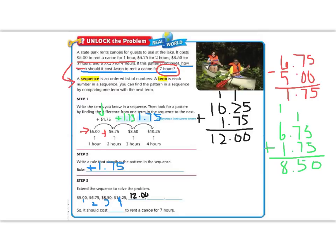Let's continue by adding another rule. 1.75. 0 plus 5 is 5, 0 plus 7 is 7, bring down the decimal, 1 plus 2 is 3, and bring down the 1. So our next term is 13.75.